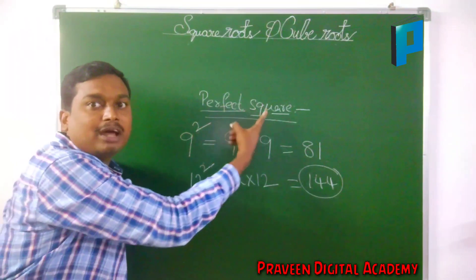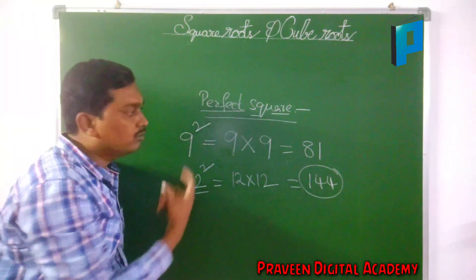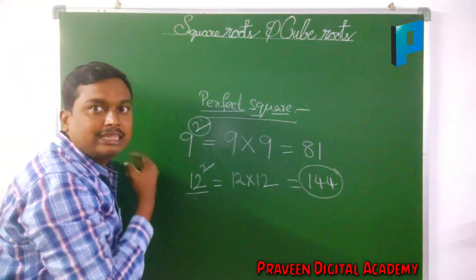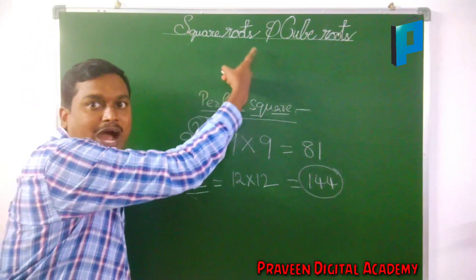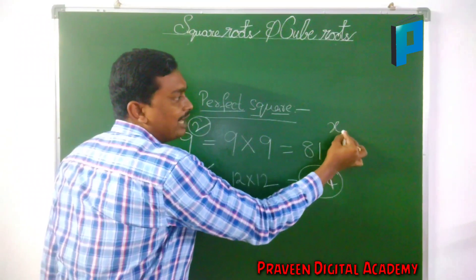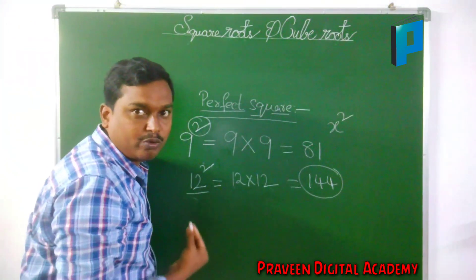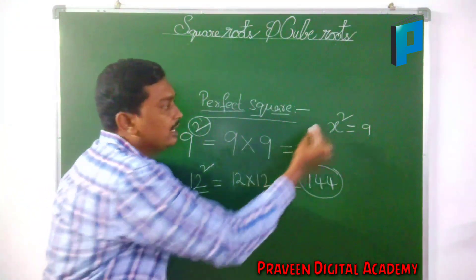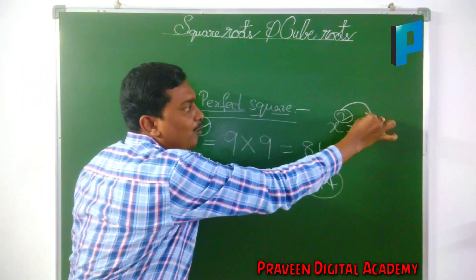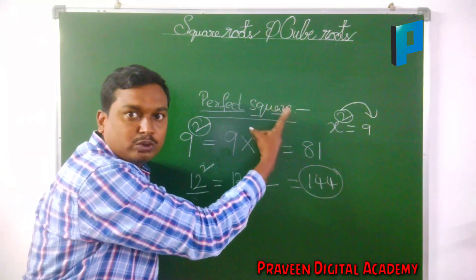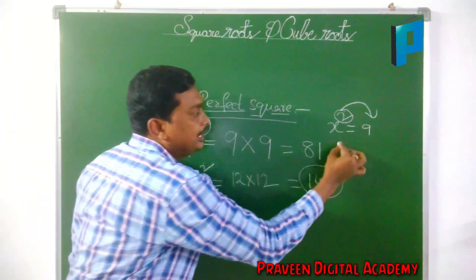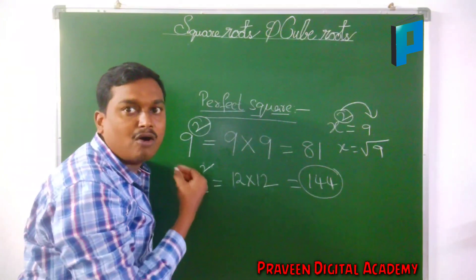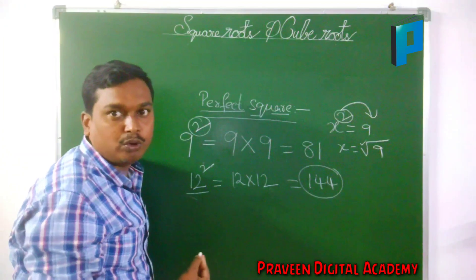If you want to know the square root, first you should know what is a perfect square. If you are having 2 on the power, we say it as square. The inverse function of a square is square root. For example, if you have a variable x and x squared is equal to 9, if you transpose the power to the right-hand side, it gives the square root of 9. Simply, the inverse function of a square is called square root.